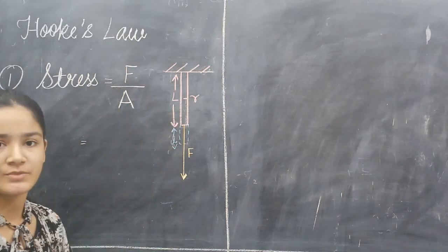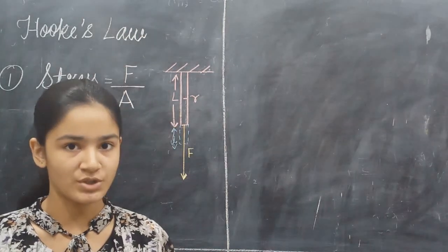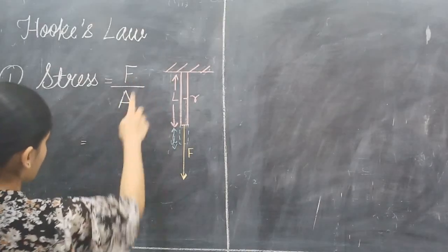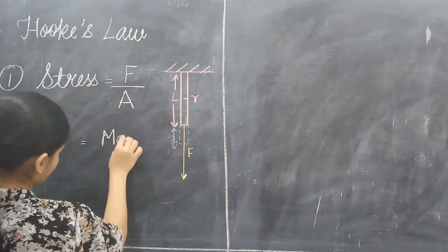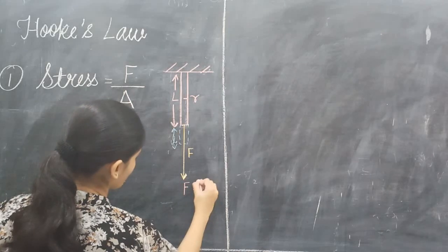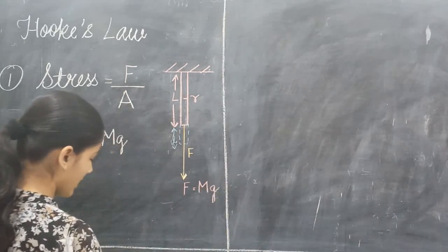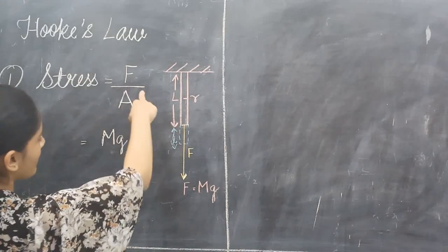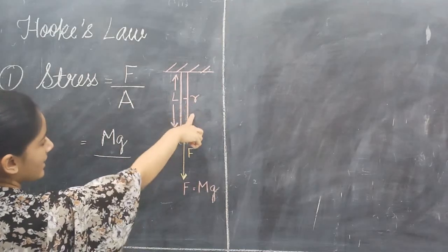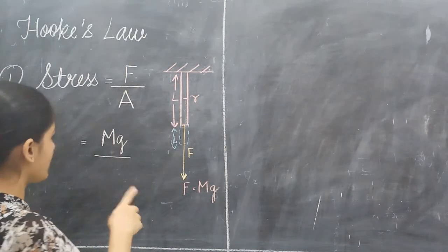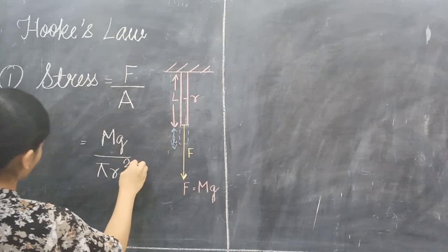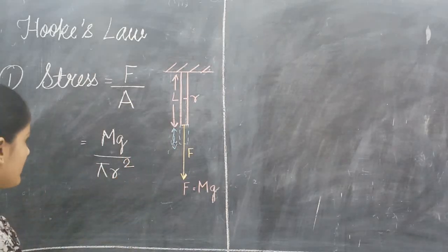Here F equals mg — we know by Newton's second law that F equals ma, which equals mg when acceleration is g. So F equals mg. Therefore, stress equals force per unit area equals mg upon πr². Here the area of the circular wire is πr². So this is what stress is.